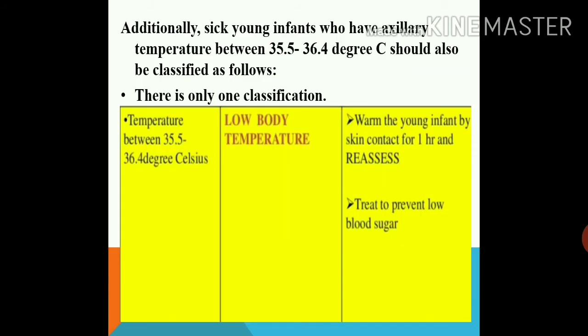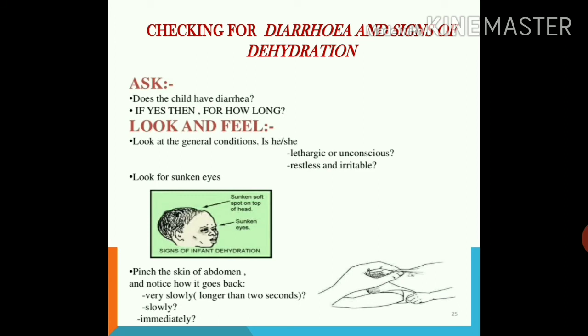Additionally, if the sick young infant has a low body temperature, this is a single yellow color-coding classification — not pink, not green. We warm the infant by skin-to-skin contact with the mother for one hour, then reassess. If the baby's temperature has not normalized, reassess and act accordingly. This covers the possible serious bacterial infection classification, jaundice classification, and temperature classification for the 0 to 2 month group.